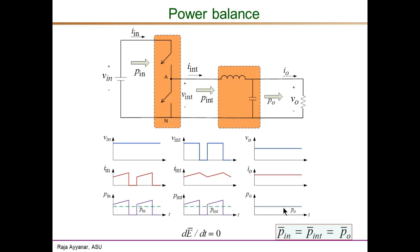At the intermediate port, the voltage v_int is a switching waveform equal to v_in when the top switch is on and zero when the bottom switch is on. The current out of this port equals the inductive current, giving a piecewise linear waveform. The intermediate power is the instantaneous product of v_int and i_int. During the off interval, even though there is inductive current, the port voltage is zero so power is zero. The average of each stage — p_in bar, p_int bar, and p_o bar — are exactly the same, which is the power balance concept.